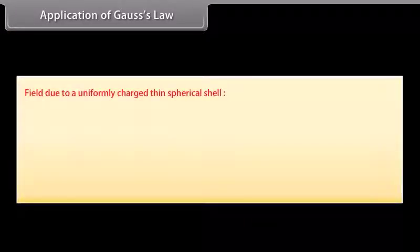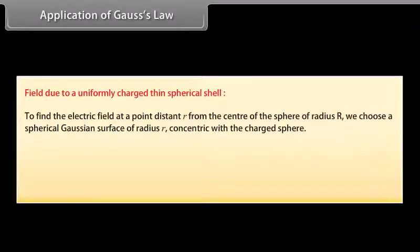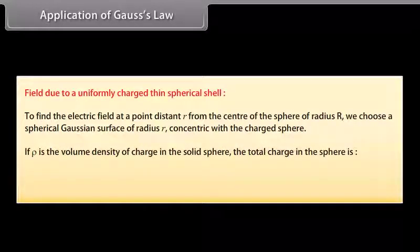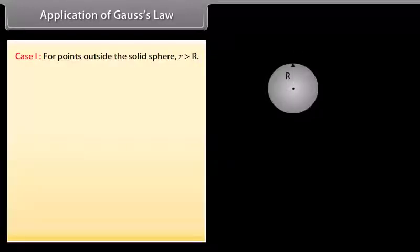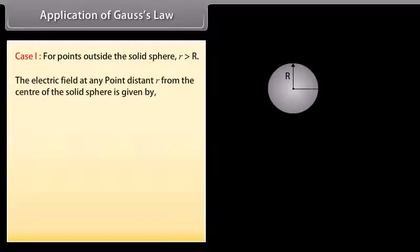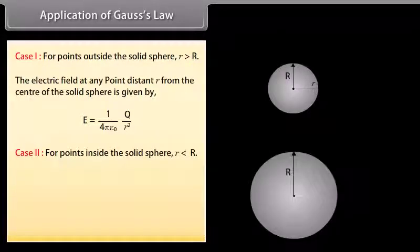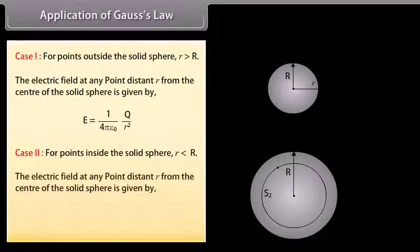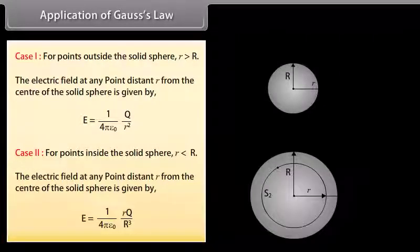Field due to a uniformly charged thin spherical shell: To find the electric field at a point distant r from the center of a sphere of radius R, we choose a spherical Gaussian surface of radius r concentric with the charged sphere. If ρ is the volume charge density, the total charge is q = (4/3)πR³ρ. Case 1 (r > R): E = (1/4πε₀) × q/r². Case 2 (r < R): E = (1/4πε₀) × r³/R³ × (proportional to r inside).